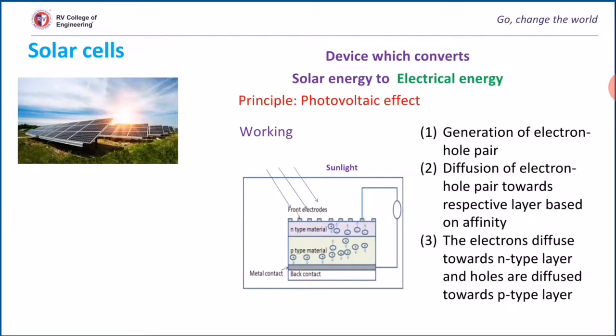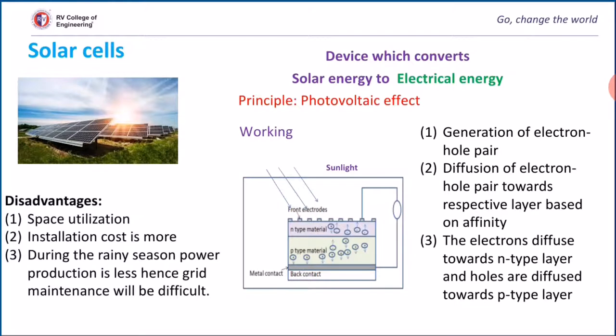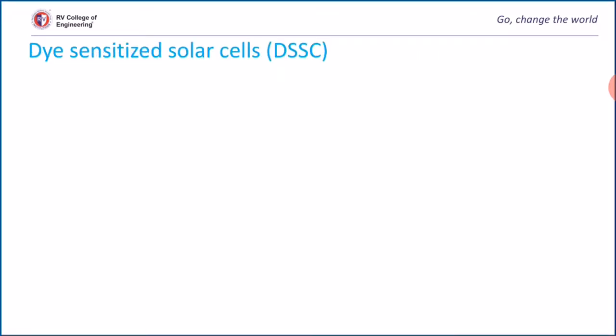The disadvantages of solar cells are: they require a large area for installation, they require high investment cost for a big power plant, and we cannot generate electricity all 365 days in a year, especially during rainy seasons. In order to overcome these limitations, we turn to dye-sensitized solar cells.